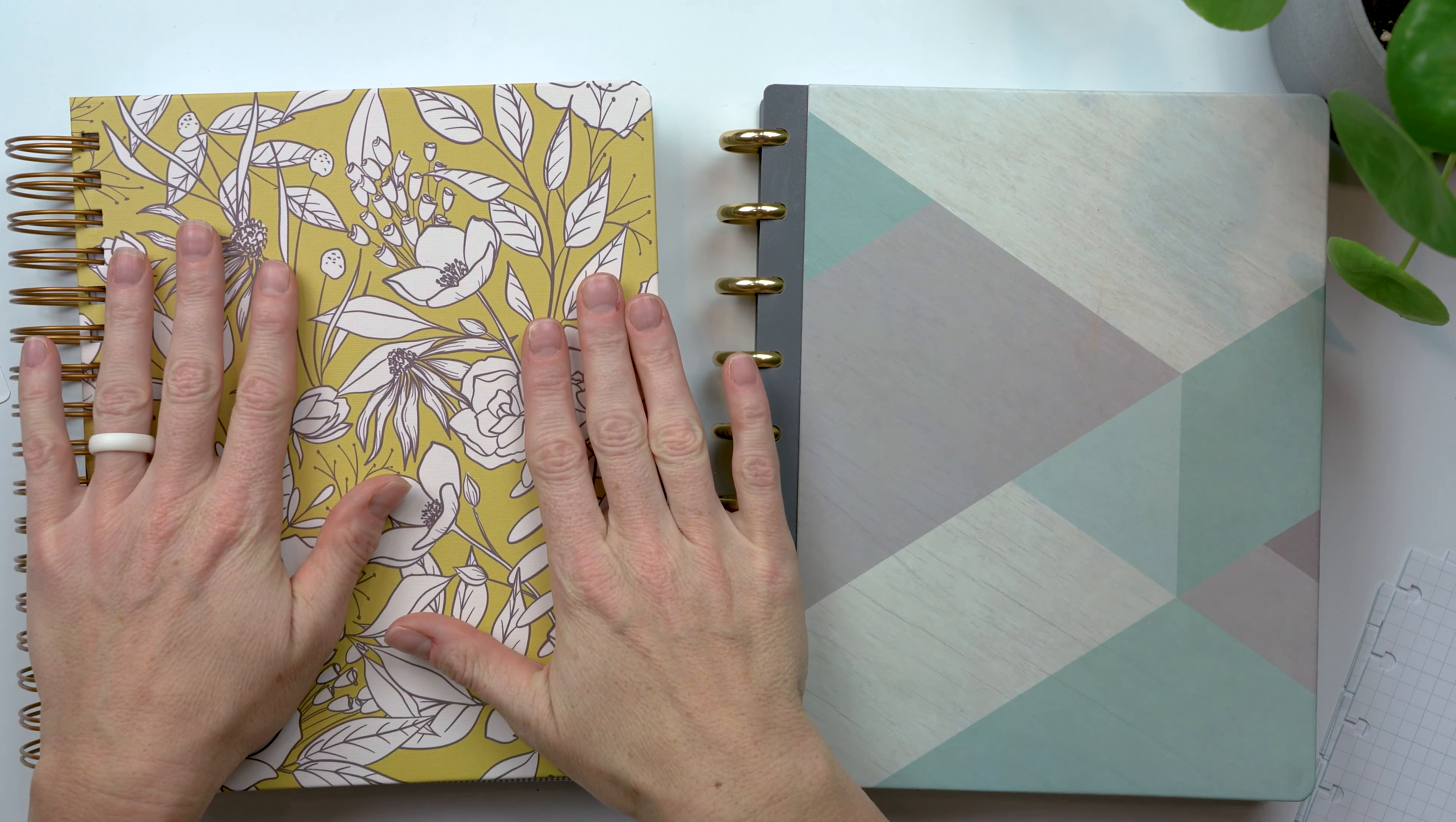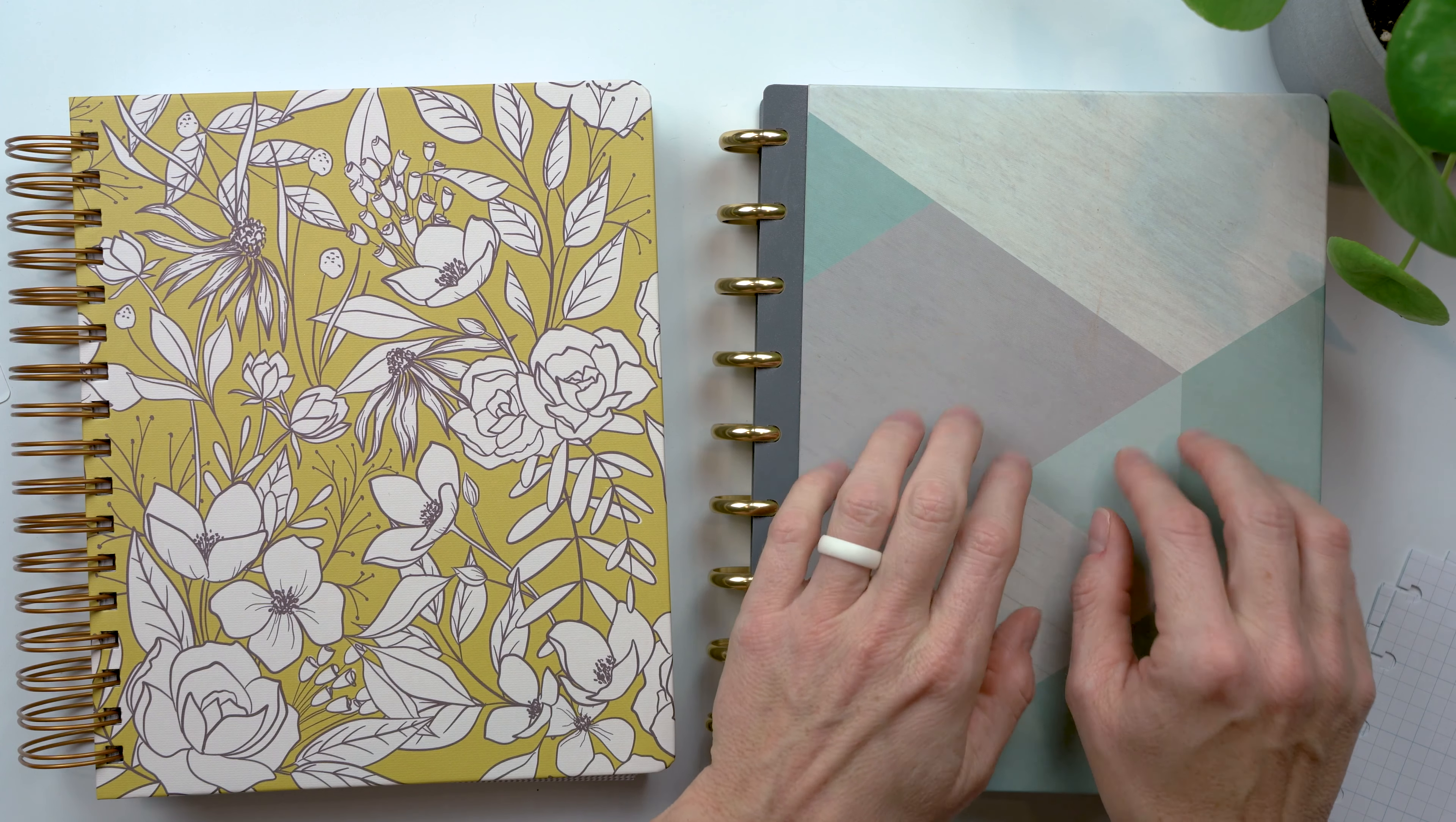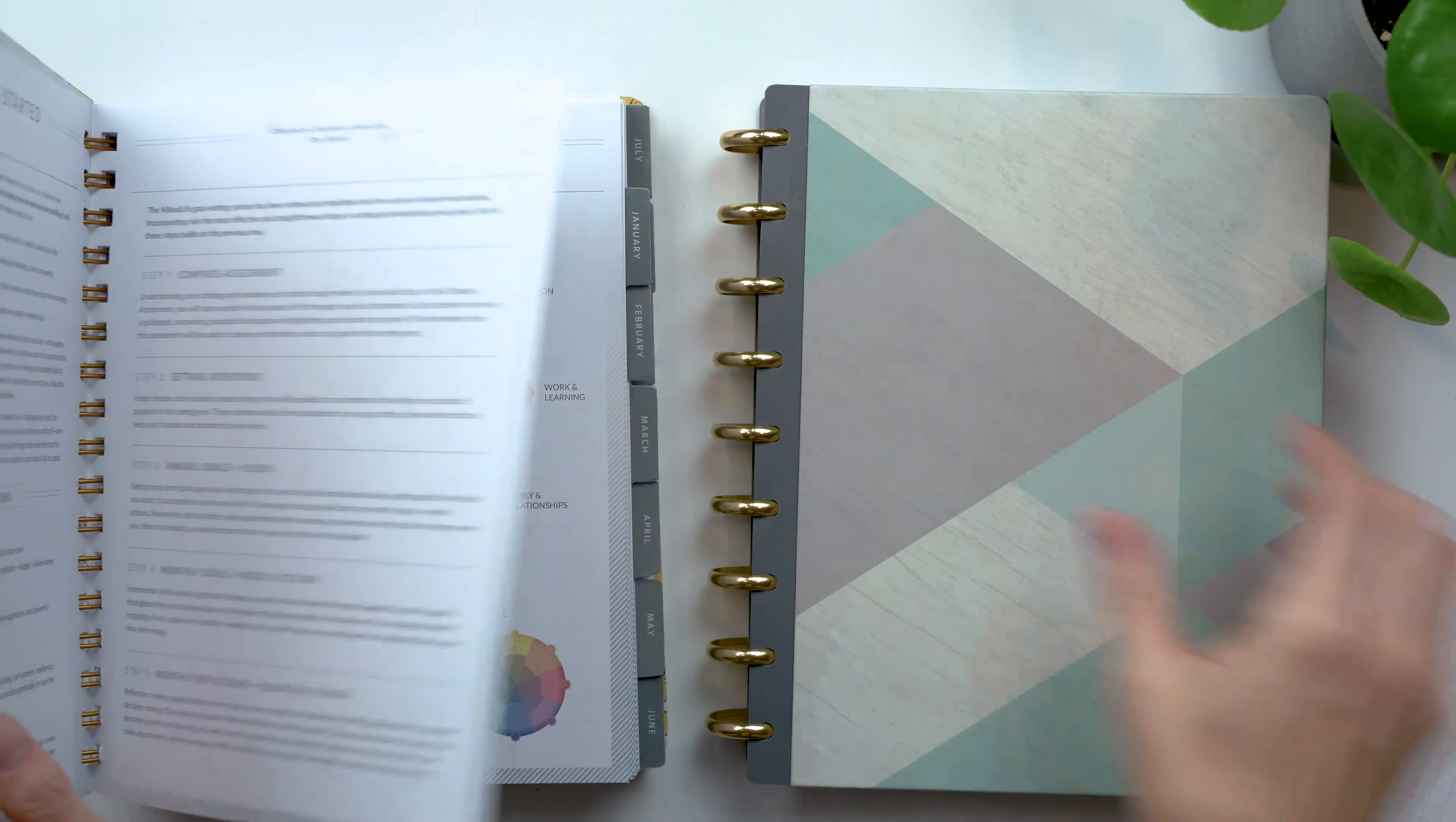So the Moxie Life is a weekly planner with a goal setting kind of planner built in. This is the Inkle Press Weekly where its primary intention is a weekly planner. It has a little bit of goal prepping in the beginning, but we're not talking about the Inkle Press separate goal planner. I don't have that one that's not on my radar. So we're going to talk about these two. So let's flip them open to the goal setting aspect so we can talk about this.